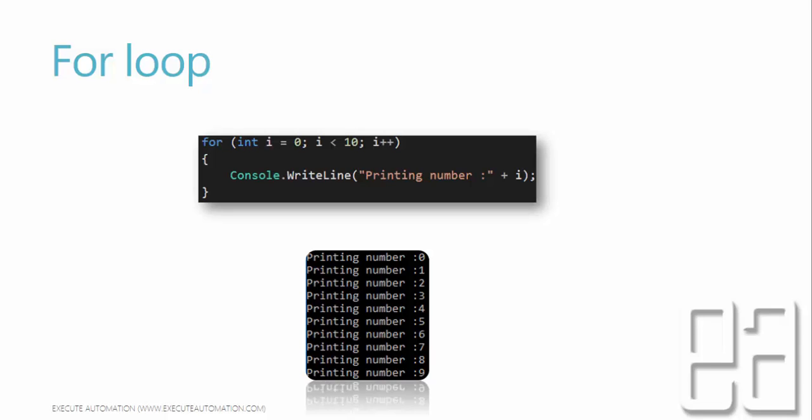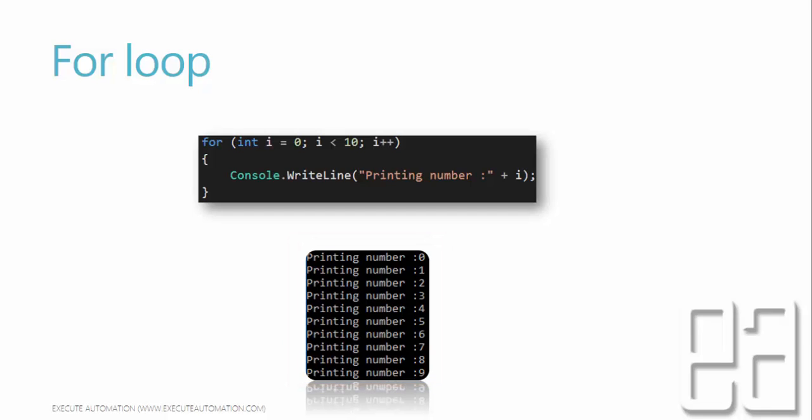Console.WriteLine will print the number, starting at 0. It prints until i reaches 9, and once i becomes 10 after the i++ increment, the condition is not satisfied so it stops. If you want to print 10 as well, you should use i less than or equal to 10, or start i from 1. That's the for loop.